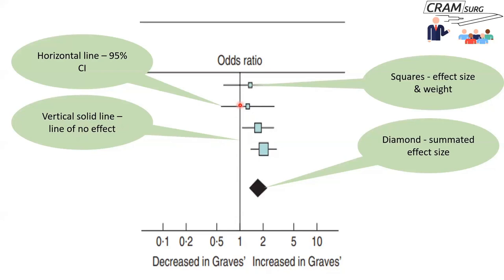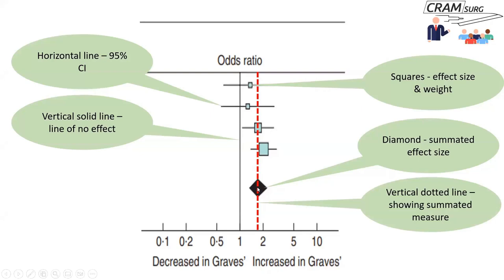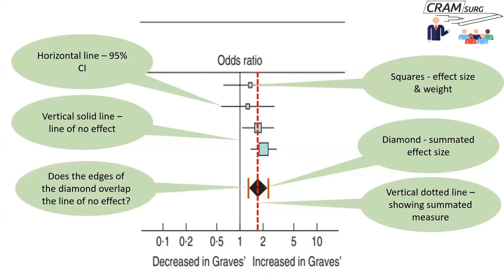The tips of the diamond represent your 95% confidence intervals for the summated effect size. The vertical solid line refers to the line of no effect. If the confidence intervals overlap the vertical line, then that study has given you a non-significant result — the p-value will be more than 0.05. The first two studies here would probably have a p-value above 0.05 because their confidence intervals overlap the line of no effect.